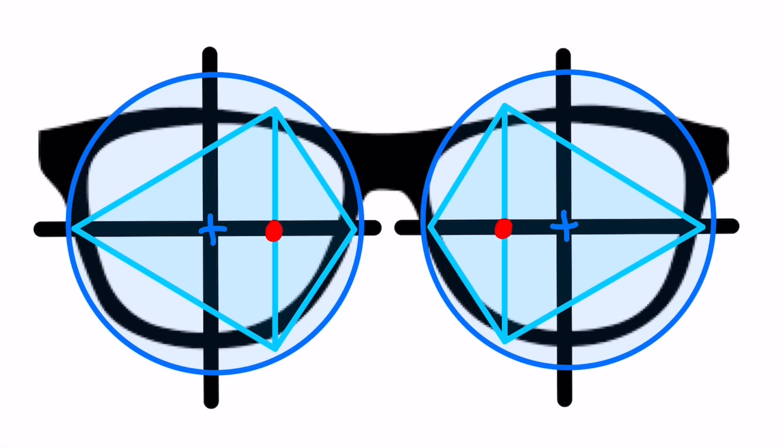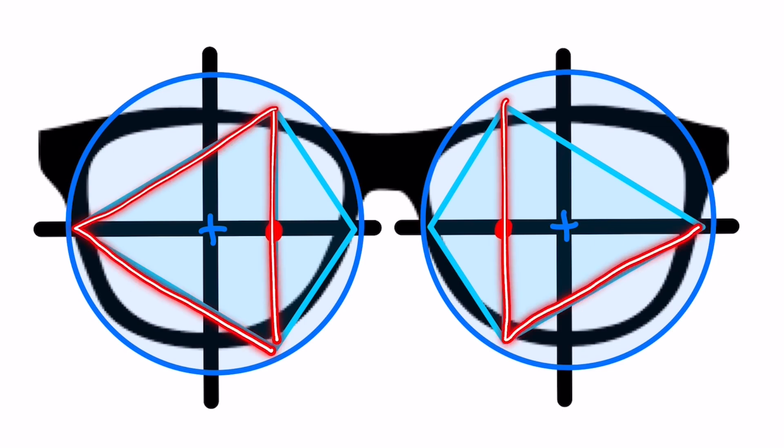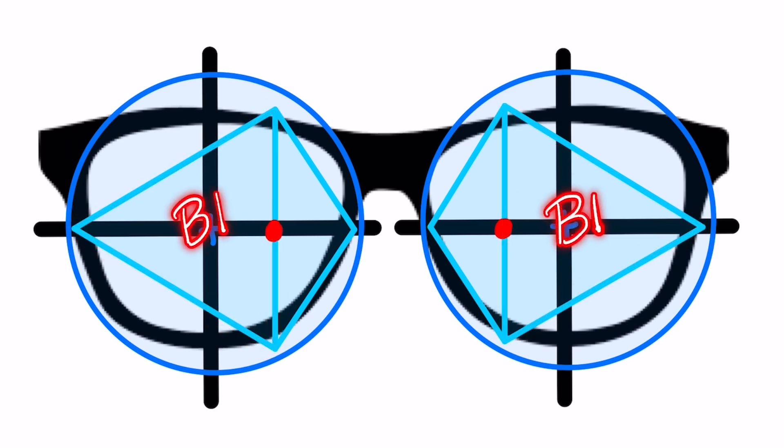If the lens had been plus powered, let's say plus 1, a decentered OC would create base in prism at the geometric center. Again, the OCs are decentered in towards the nose. The resulting prism caused by the plus lens shape would be base in.